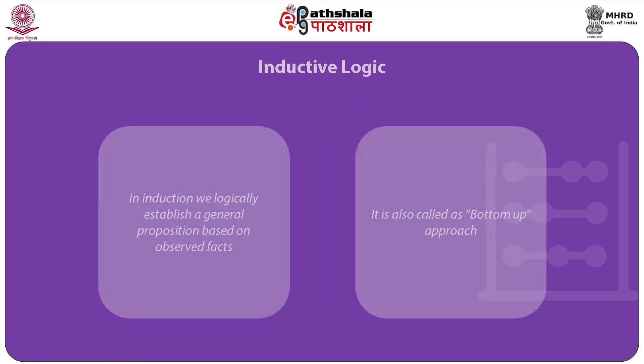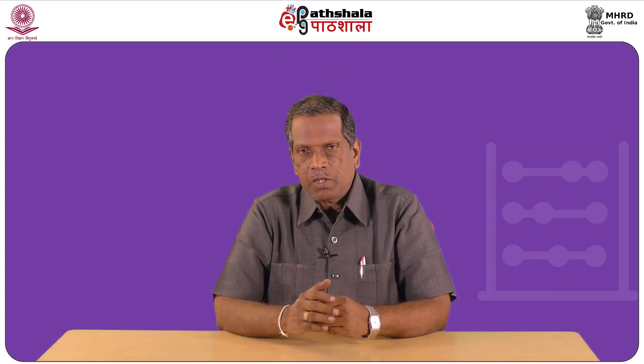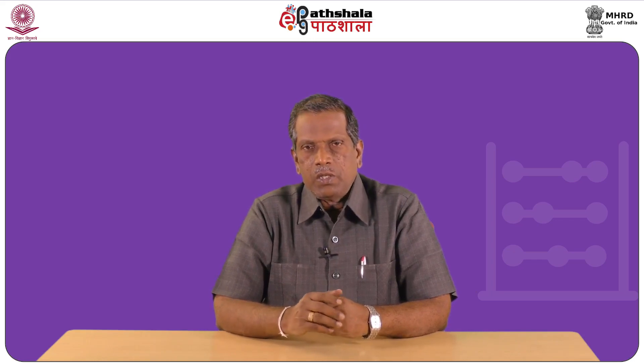The first one is inductive logic. In inductive logic, it is a process where we observe certain phenomena and on that basis arrive at conclusions. In induction, we logically establish a general proposition based on observed facts. It is sometimes called a bottom-up approach. One makes a set of observations and seeks to explain what one senses. For example, it is observed that five women A, B, C, D, and E in a sample village have five, six, seven, eight, and nine children respectively. From these observations, one can conclude that women in the selected village are producing a large number of children.